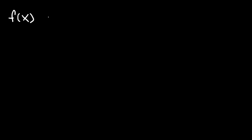In this video, we're going to talk about how to use the binomial series to represent a function as a power series. Let's go ahead and start with this example: f(x) = 1 over 1 plus x squared. How can we represent this as a power series?